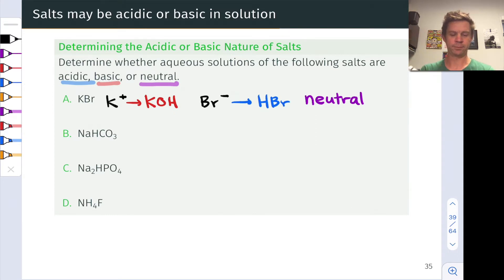What about NaHCO3? Well here again let's split it up into its component ions Na plus and HCO3 minus. Now Na plus is the conjugate acid of a strong base, NaOH. And so just like K plus, this is an ion that's not going to react with water to any appreciable degree.